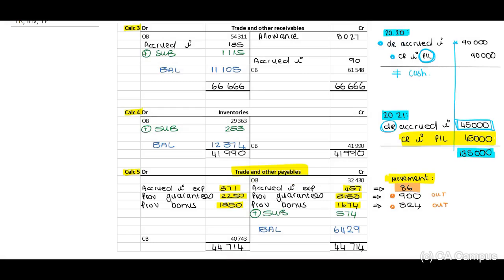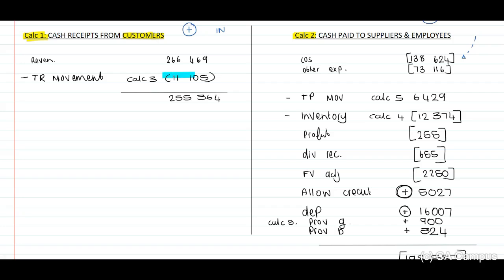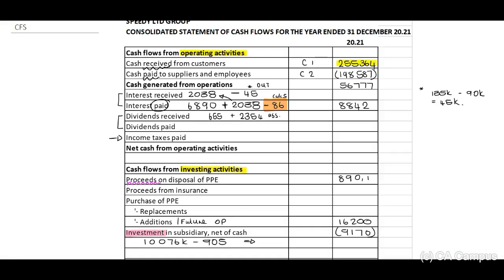Balancing the T-accounts: for trade and other receivables, on the credit side the total will be 666,666. To make the debit side equal, there is a balancing amount of 111,205. Think about this journal: if we debit trade receivables, we credit bank — bank decreases. Therefore in Calculation 1, we decrease cash receipts by 111,105, giving total cash receipts of 255,364. Transfer this to the face: 255,364.